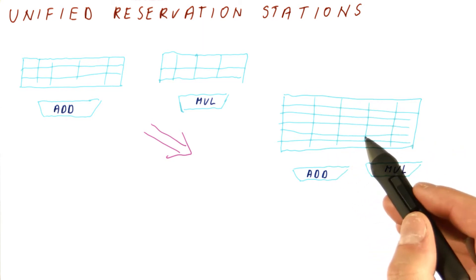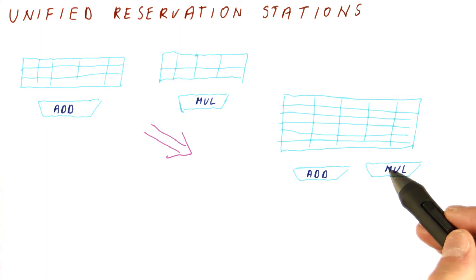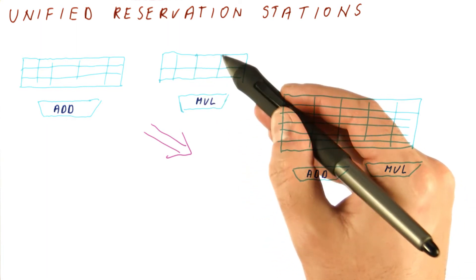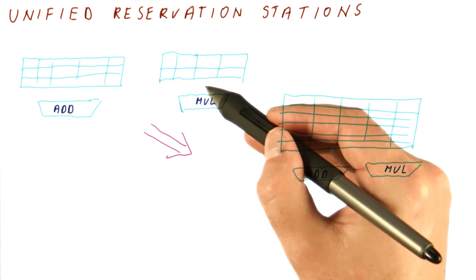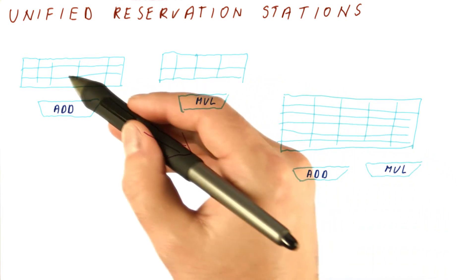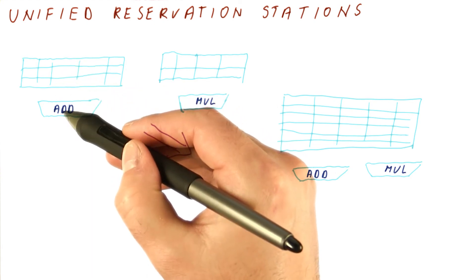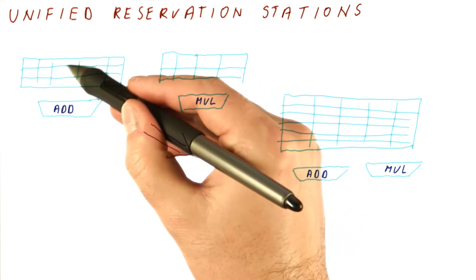The drawback here is that the logic for dispatching instructions into these execution units becomes a little bit more complicated. Here, for issue into the multiplication, we only needed to see whether one of these is available, and if one or more are available, select one. Meanwhile, here we are selecting one of these three and sending it to the add unit. And if more than one are available, we have to figure out just which one of the three.